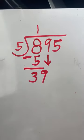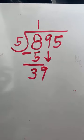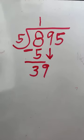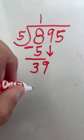Next, we're going to bring down our 9. Now we've got to figure out how many groups of 5 we can get within 39. So again, we're going to count by 5s.